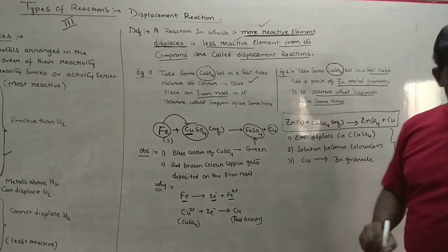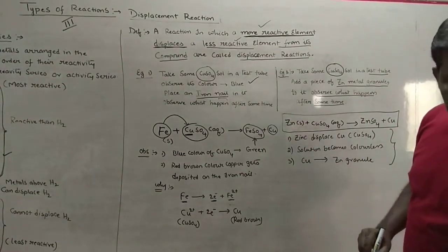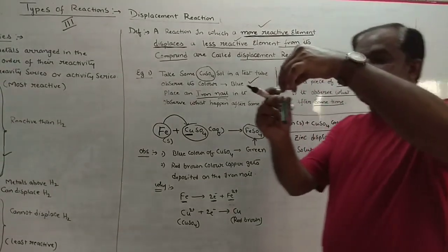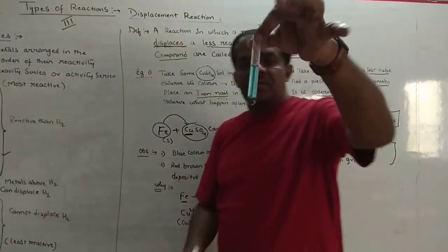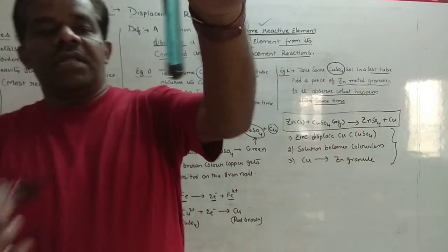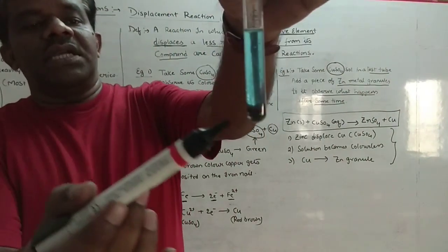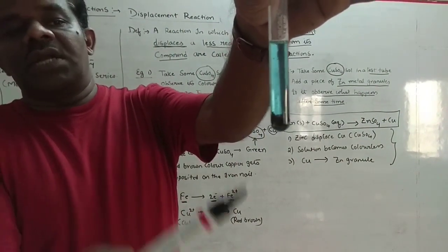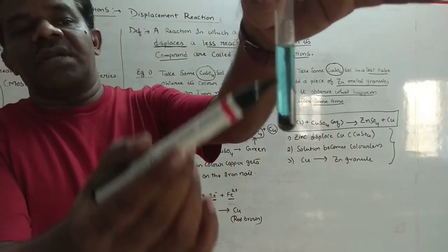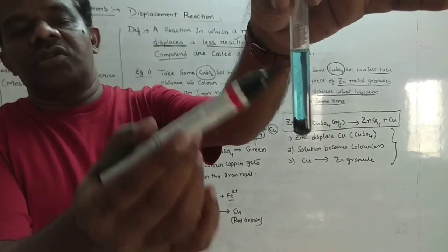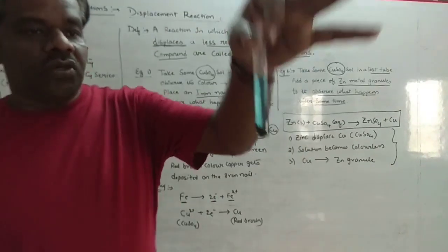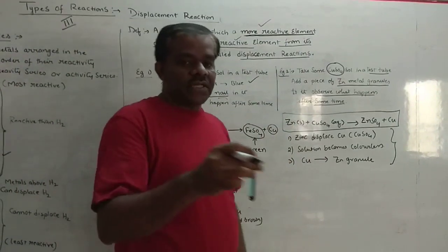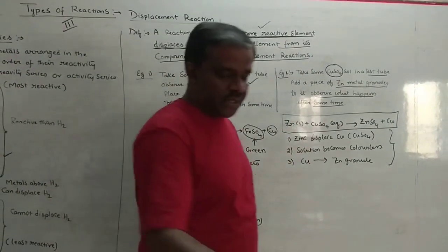Let us see what happens. You can see very clearly that the zinc granule has changed to reddish-brown color due to copper deposition. After some time, the solution will also lose its blue color and become colorless. This is a typical example of a displacement reaction taking place.